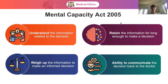The Mental Capacity Act of 2005 established the criteria for capacity and assumes that all adults — everyone over 18 — has capacity. If a physician is in doubt, four criteria must be met: the patient has to be able to understand the information related to the decision, retain the information for long enough to make a decision, weigh up the information to make an informed decision, and communicate their decision back to the doctor. If one of these four criteria is not met, the patient does not have capacity and the doctor is expected to act in the best interest of the patient.